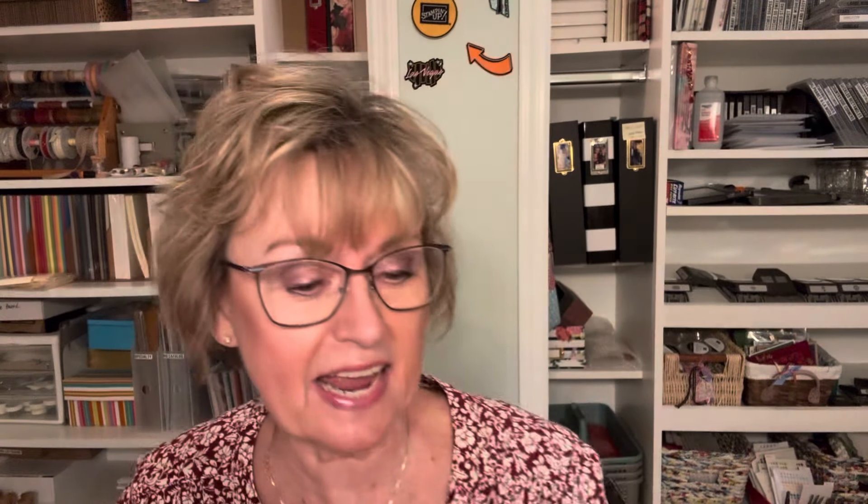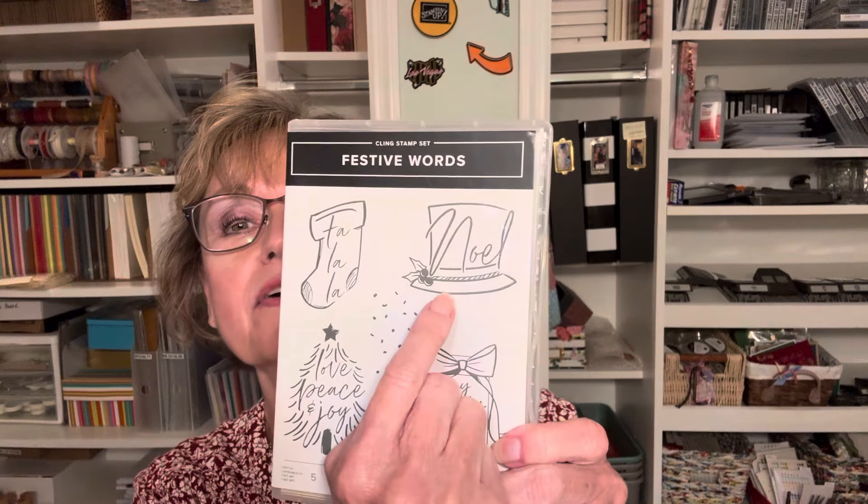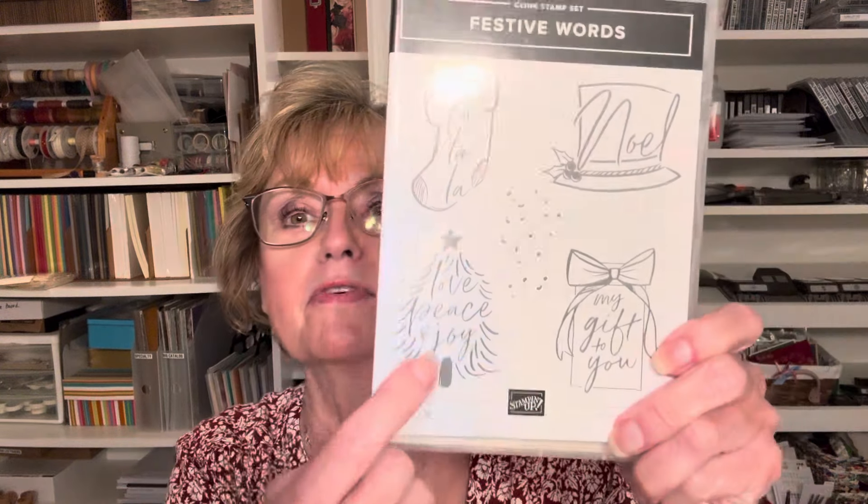It's a red rubber set, a five stamp set. And when I first saw it, this really popped out. That was the reason that I really wanted this stamp set. But now as I'm looking at it, in addition to that, I'm in love with this Christmas tree. And I love the sentiment: love, peace, and joy. So that's the stamp that I'm going to make our card with today.